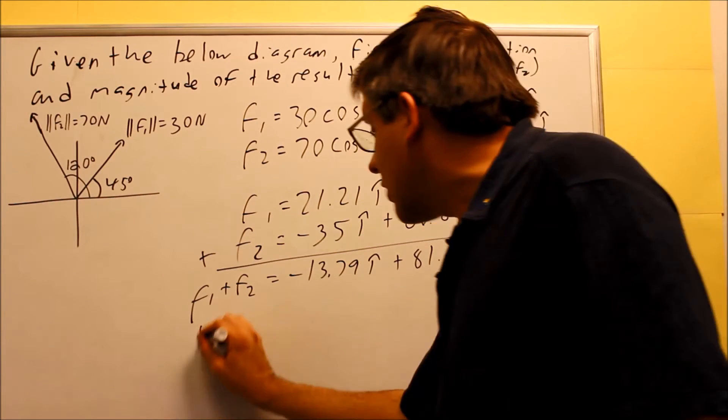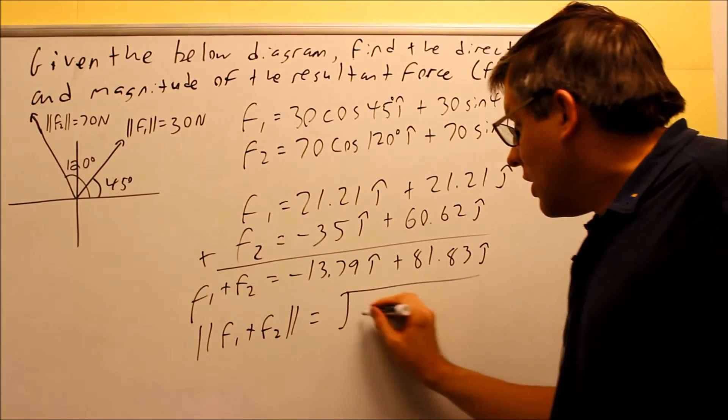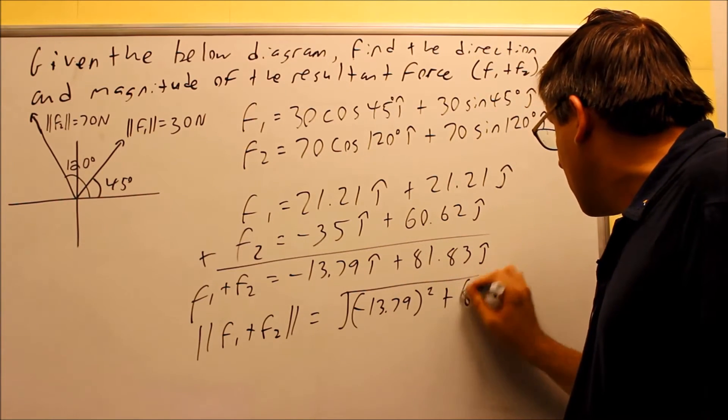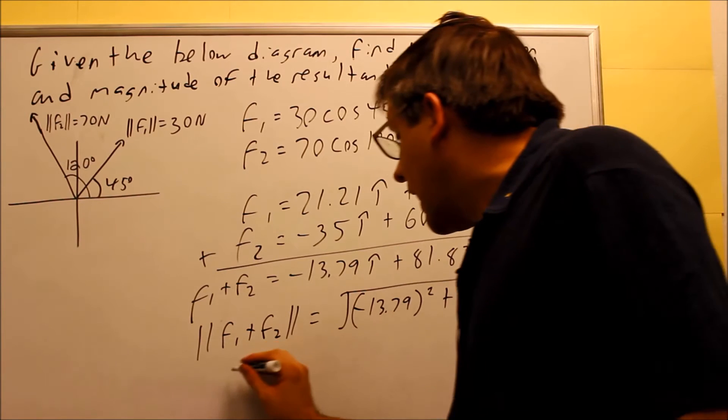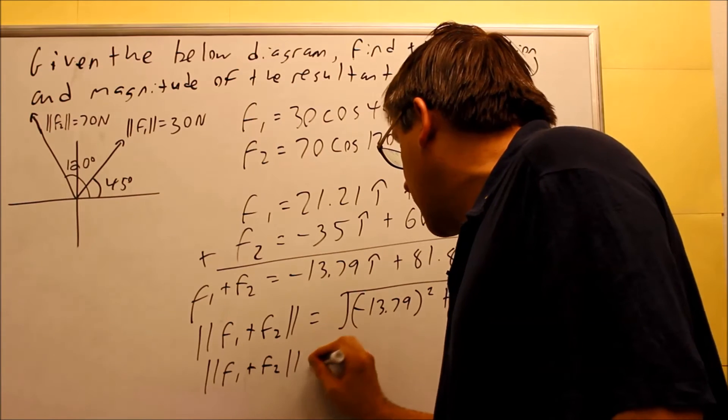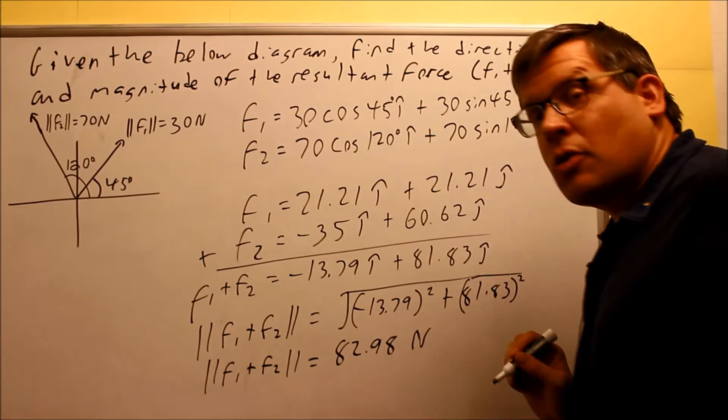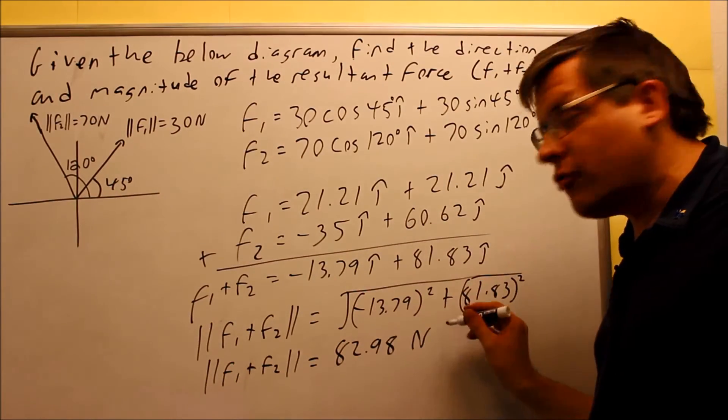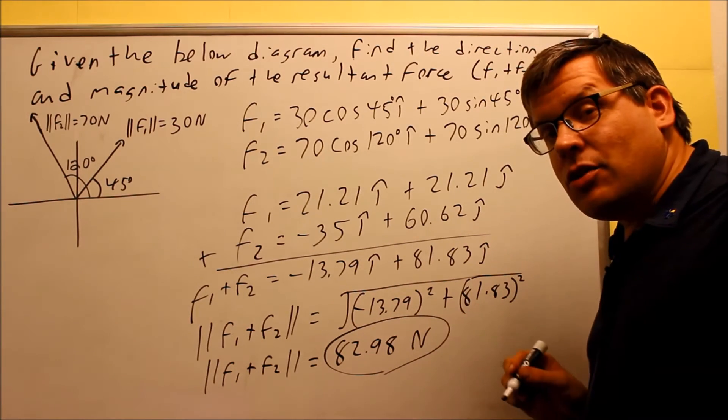So, the first thing I want to find is the magnitude, F1 plus F2. That's just using the square root formula. Negative 13.79 squared and 81.83 squared. I'm going to put that into the calculator and the magnitude that you're going to get, if you work all that out, you're going to get 82.98. So, almost 83 and that's going to be in terms of Newtons because that's the same unit of force that the original ones had. So, this is your final answer for magnitude. That's one of my answers, 82.98 Newtons.